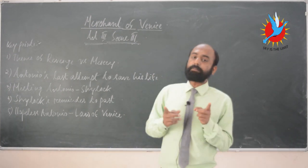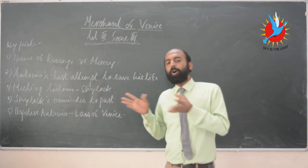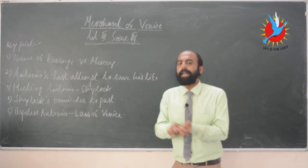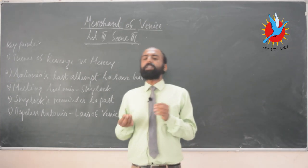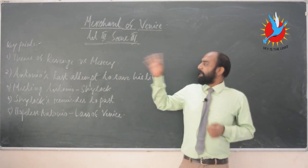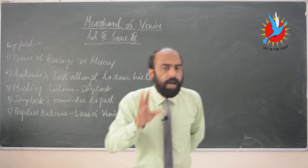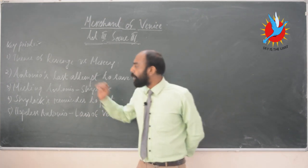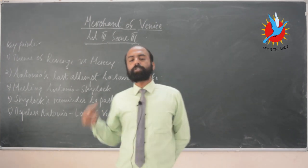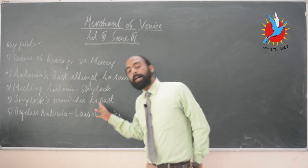Shylock also reminds Antonio about the past — that without reason, Antonio used to humiliate Shylock, spit on his religious garment, and hinder him. He said something like that. Finally, Shylock reminds Antonio that there was a time when Antonio called Shylock a cutthroat dog, and now Shylock warns Antonio: 'As you have called me a dog, you should be warned of my teeth.'